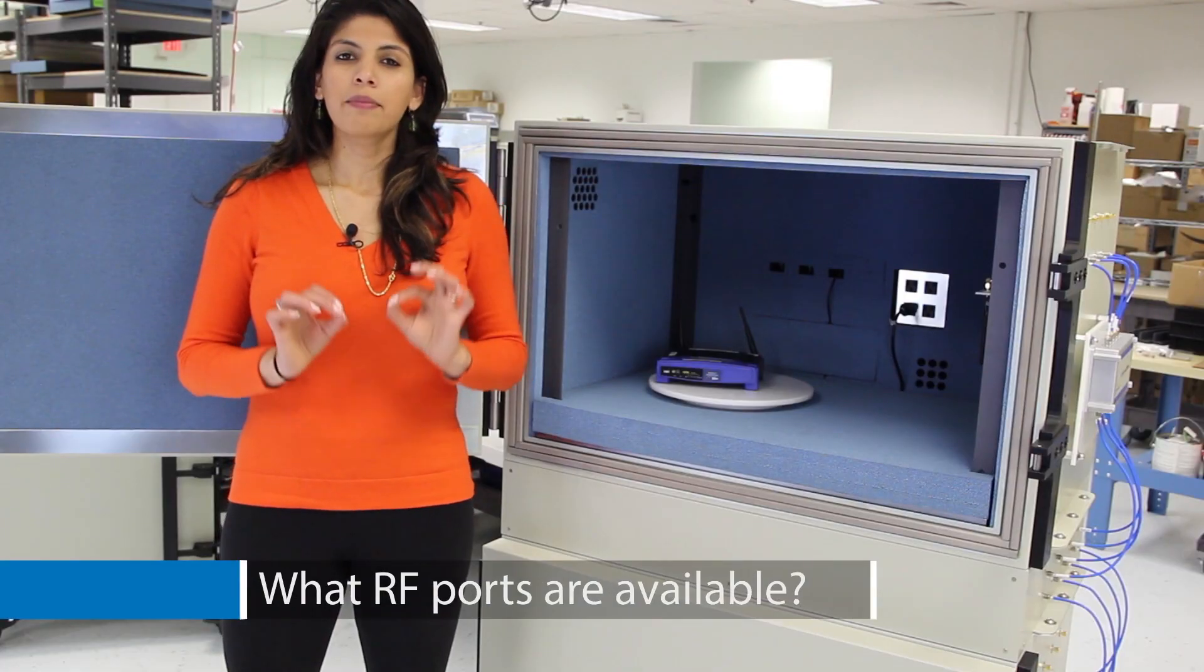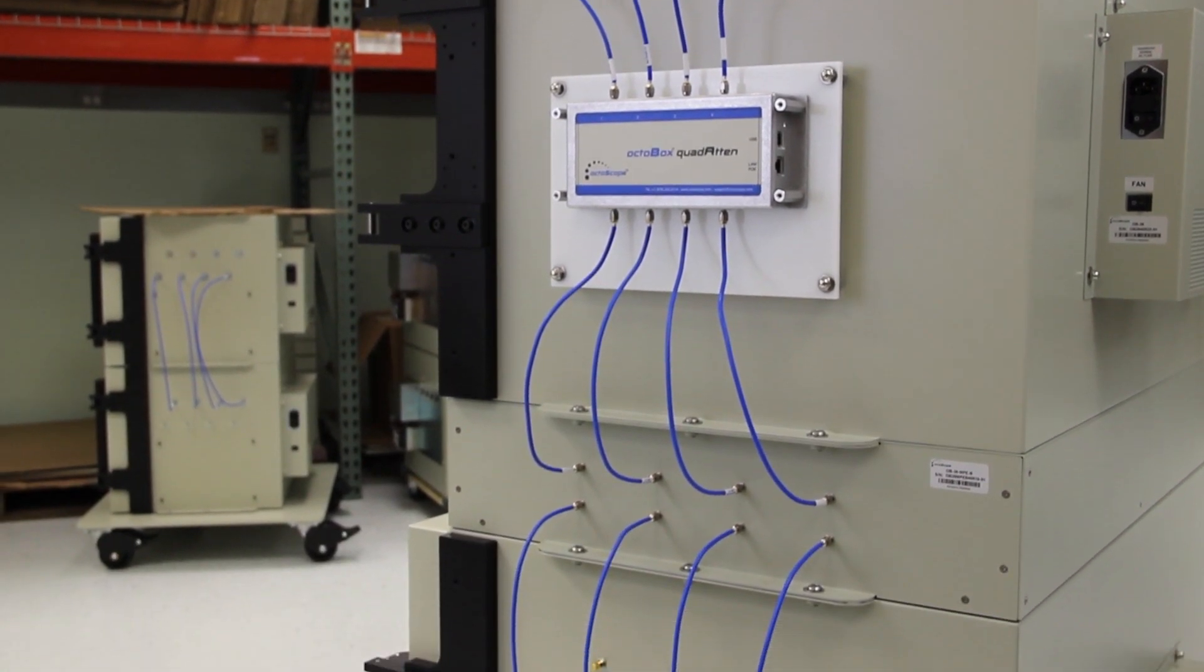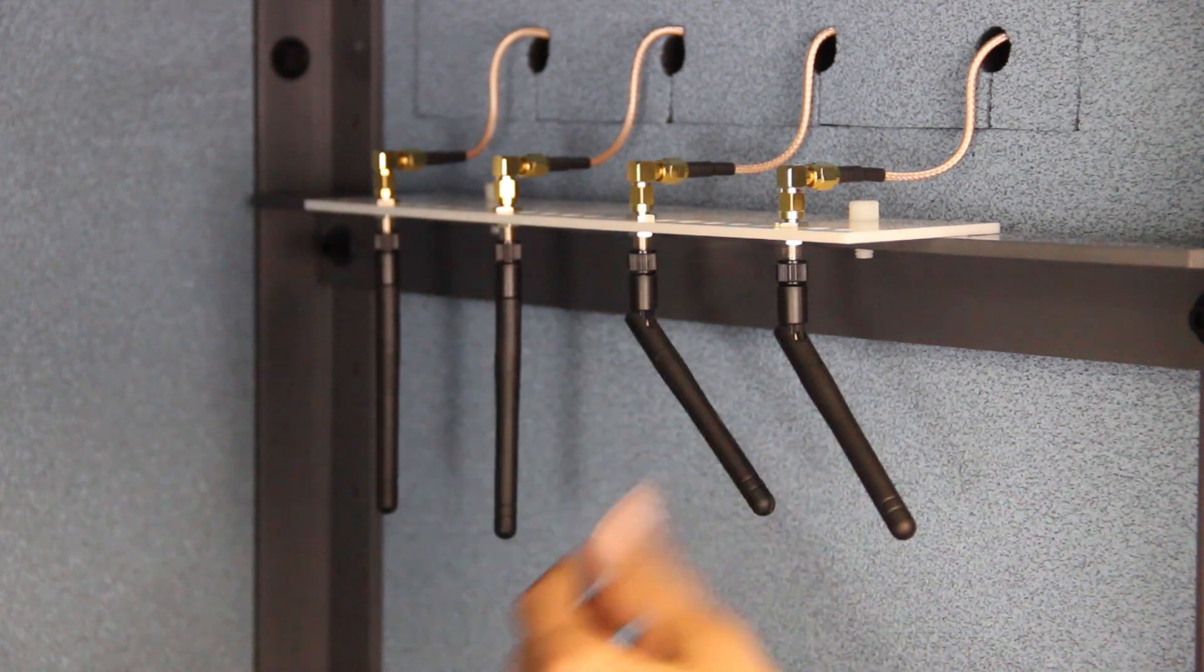Each Octabox comes equipped with 8 RF ports, either SMA or N connectors. Typically, 4 of the 8 ports are used for the 4x4 MIMO signal.